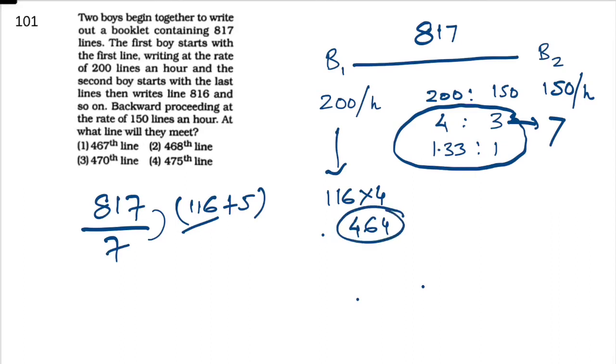At the same time, B2 completes 116 times 3, that implies 348 pages. The remaining 5/7 for B2 equals 1.33, that implies B2 completes 2.66 more pages.